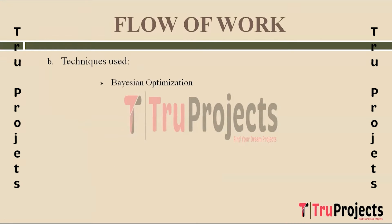The first technique used is Bayesian Optimization for hyperparameter tuning — a sophisticated method for optimizing hyperparameters of machine learning models. It efficiently searches through the hyperparameter space to find the best combination that maximizes model performance, helping fine-tune LGBM, XGBoost, and CatBoost to achieve optimal results.